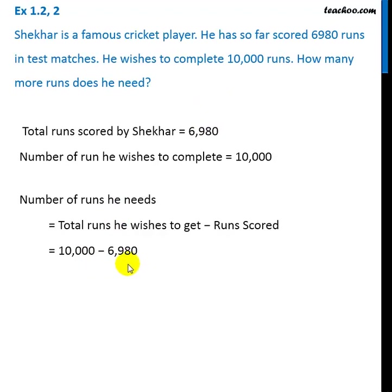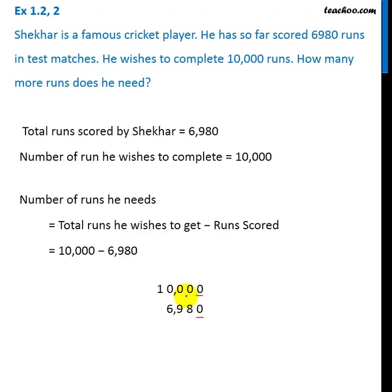Now let's subtract them. To subtract, we put them on top of each other — meaning the last digit of this number and the last digit of the other number are below each other. Similarly, second last and second last are below each other, and so on. We start from the right and go towards the left.